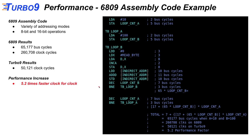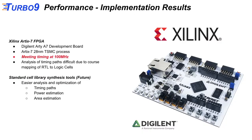For real-world performance testing, we wrote a more realistic assembly program for the 6809 with a variety of addressing modes, some 8-bit and some 16-bit operations. As a result, we see a 5.2 times faster clock-for-clock performance than a traditional 6809.